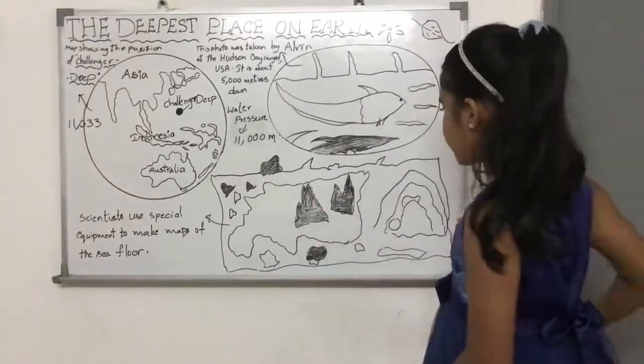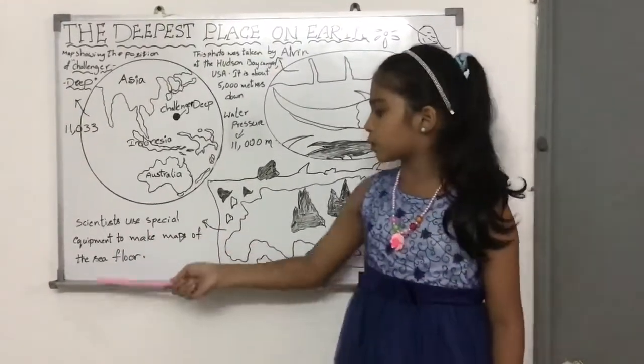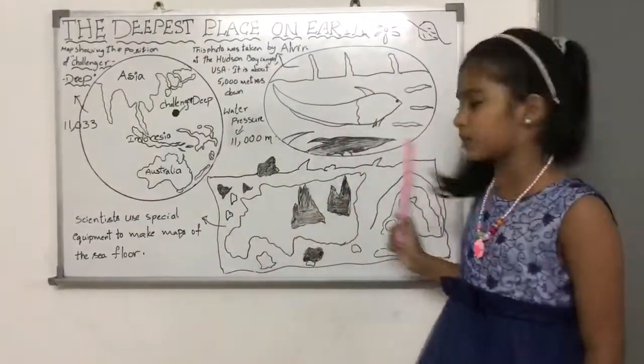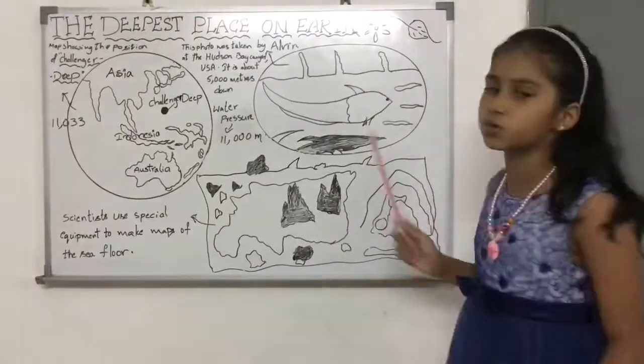Now, this is a map. Scientists use special equipment to make the maps of the sea floor and this is under the ocean. This shows the tallest mountains and the deepest valleys.